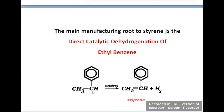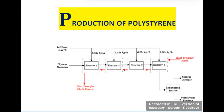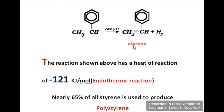In this reaction you can see the first reactant is ethylbenzene, and after the catalytic reaction we get styrene. That styrene will further be used to produce polystyrene. The production of styrene from ethylbenzene is an endothermic reaction, so the heat of reaction is -101 kJ/mol. The negative sign shows it is an endothermic reaction which needs heat to proceed.